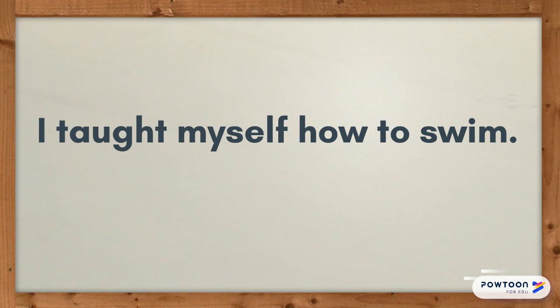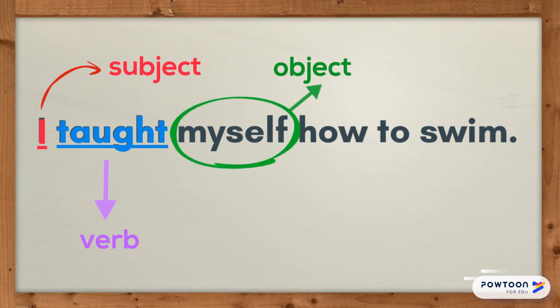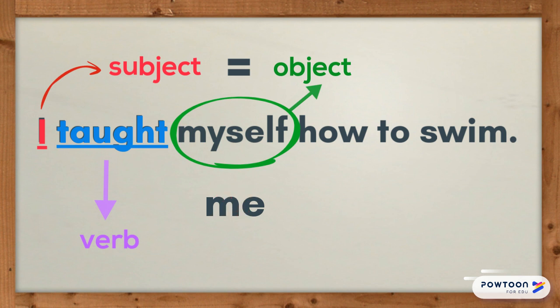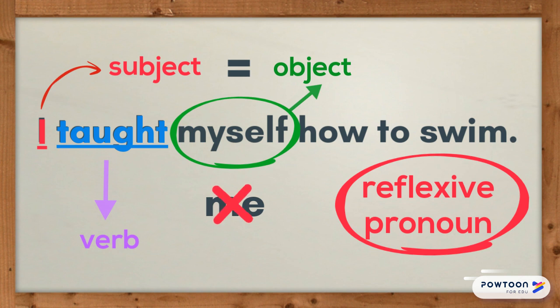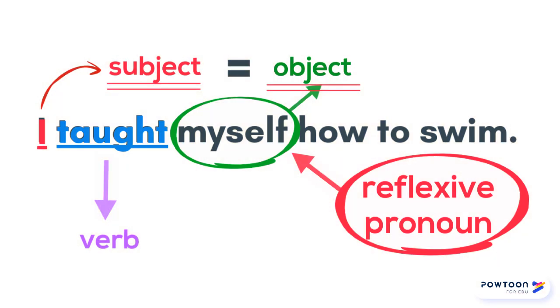Now let's look at the following sentence: 'I taught myself how to swim.' In this sentence, 'I' is the subject and 'taught' is the verb. Because the object of that verb is the same as the subject, we can't use 'me' as we did in our first example. We have to use what we call a reflexive pronoun, which in this case is the word 'myself'. A reflexive pronoun tells us that the subject and the object of a sentence are the same — the object reflects back to the subject, just like a mirror reflects back your image.